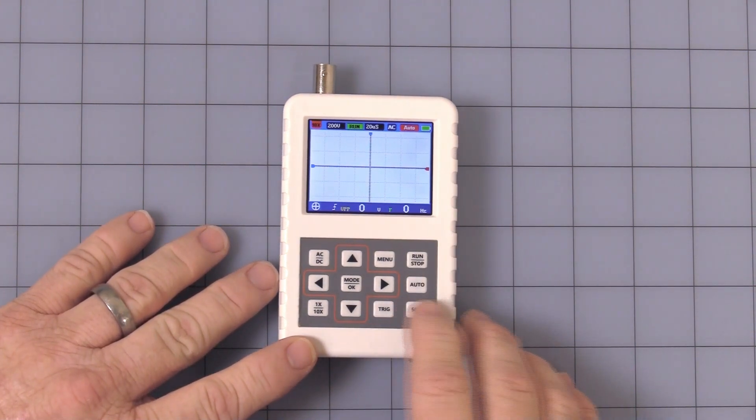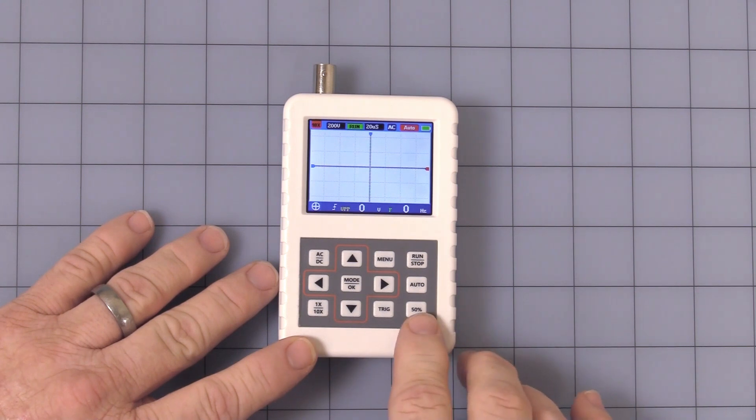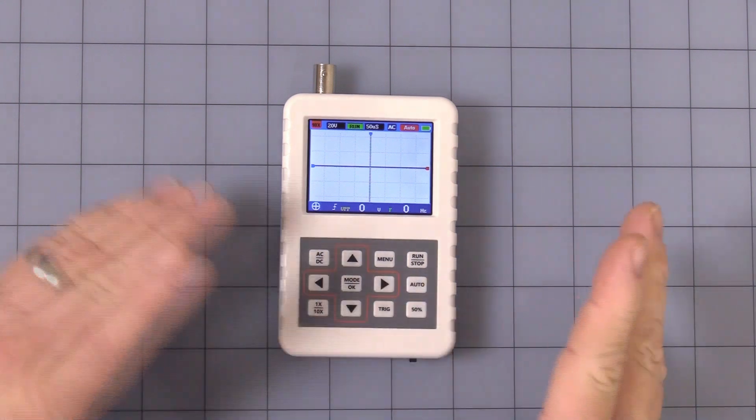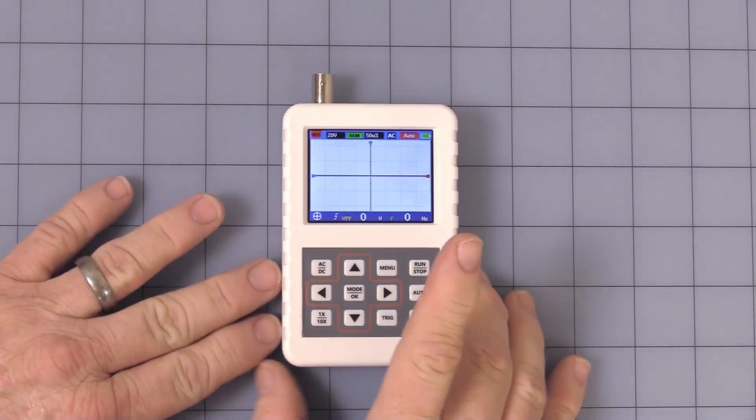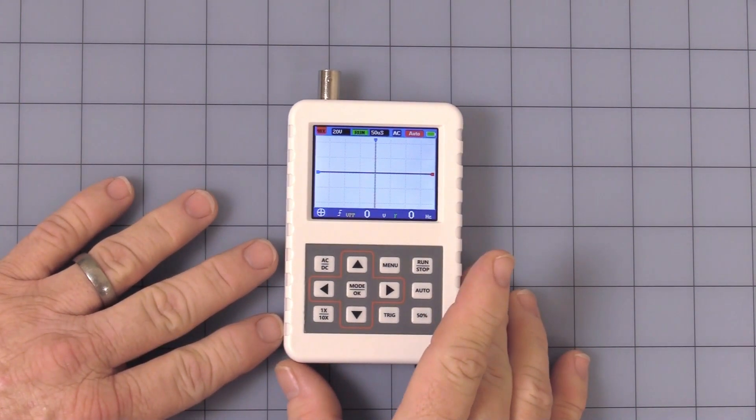Flip it over if you want to. It sets an automatic 50% button. Auto helps get you in the range quicker, a little less messing with the buttons.